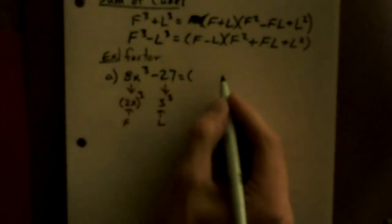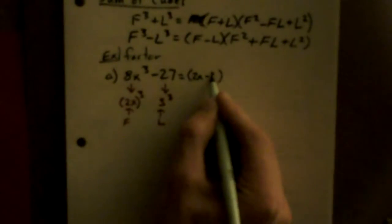It starts out with F - L. So this is equal to F - L, that's 2x - 3.